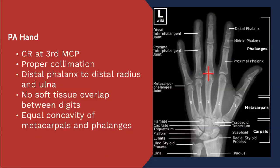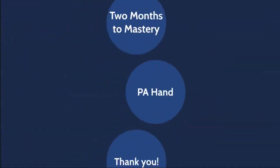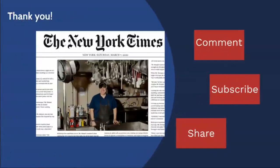You'll notice the first digit does not look equally concave on either side — for example, on the distal phalanx. The reason for that is because it is seen more or less in an oblique view when we're doing the PA. Hopefully this is helpful!